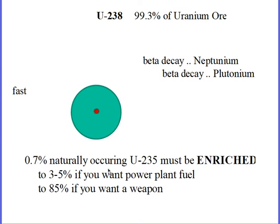Again, only less than 1% of the uranium you dig out of the ground is the desirable isotope. If you want a chain reaction to go forward, you are going to have to raise the percentage up to about 5%, and then there is enough 235s around that you can have a sustained chain reaction — and that is what we do in a power plant. If you were to enrich it up to 85%, then possibly all three of the neutrons coming off would find a 235, and you would get an exponential growth in the rate of fissioning, which leads to the explosion of an atomic bomb.